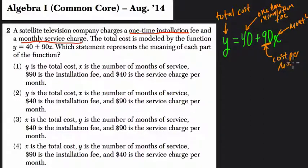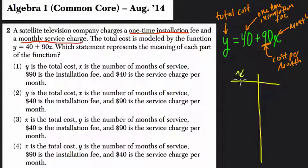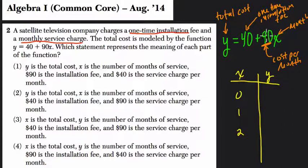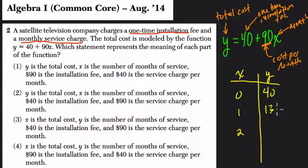If that's not making sense, we can try making a table. Try a couple of values for x — even 0, 1, and 2. What would y equal? Well, if x is 0, you get 0 times 90, plus 40, that's 40. If x is 1, you get 90 times 1 is 90, plus 40 is 130. And if x is 2, you get 90 times 2 is 180, plus 40 is 220.